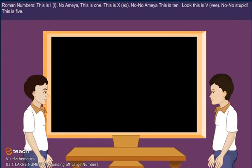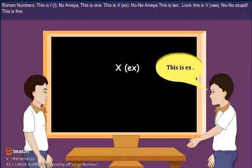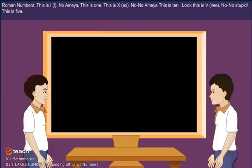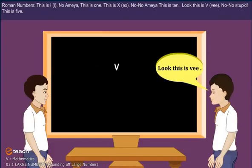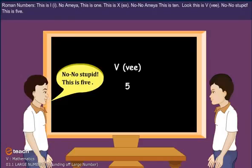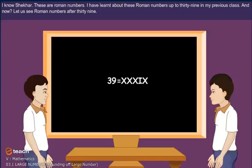Roman Numbers. A student says: 'This is I.' But the teacher corrects: 'No — this is one.' Another says: 'This is X.' The teacher replies: 'This is ten.' And: 'This is V.' The teacher confirms: 'This is five.' These are Roman numbers.